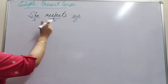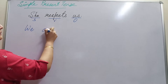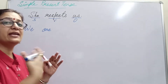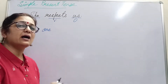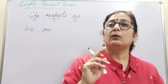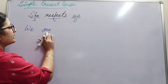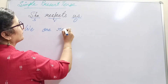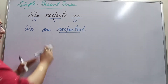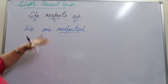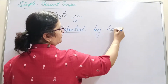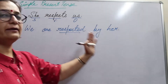So what does it become? We are — present form because it's present tense. And when we change the verb, it will always be in the past participle form. Whenever we change from active to passive voice, the verb changes into past participle form. So: 'We are respected' — the 'are' shows the present form and 'respected' is the past participle. By whom? Since it's 'she,' it becomes 'her': 'We are respected by her.'